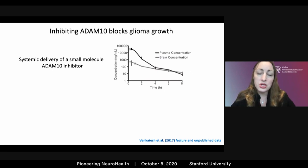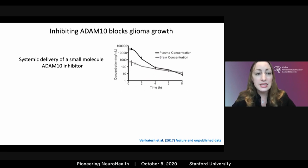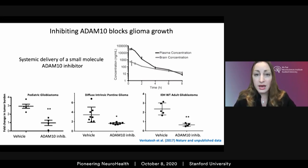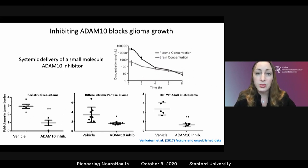Neuroligin-3 is a really interesting therapeutic target and ADAM10 is the enzyme that regulates its release into the tumor microenvironment. Conveniently, there's a brain-penetrant ADAM10 inhibitor that has been through Phase 2-3 clinical trials for other indications. We tested whether this ADAM10 inhibitor might phenocopy the loss of Neuroligin-3 in the tumor microenvironment. I'm excited to report that in multiple different models of patient-derived glioma xenografts — from pediatric glioblastoma to diffuse intrinsic pontine glioma and adult glioblastoma — there is a stagnation and slowing of tumor growth when this ADAM10 inhibitor is delivered systemically.